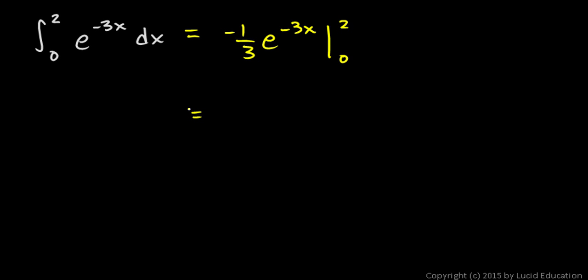So this is going to be, let's put the negative 1 third out front, and this will be e to the power of negative 6 minus e to the power of 0.